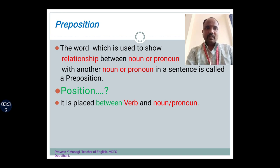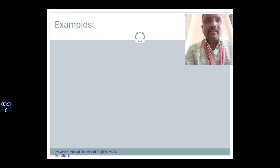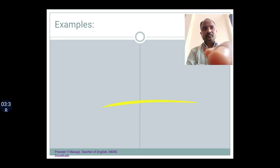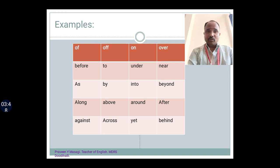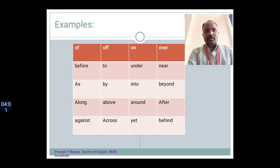Now let's move on to some examples so that we will easily understand. Some examples of prepositions are: of, on, over, before, to, under, near, as, by, into, beyond, along, above, around, after, against, across, yet, behind, etc.